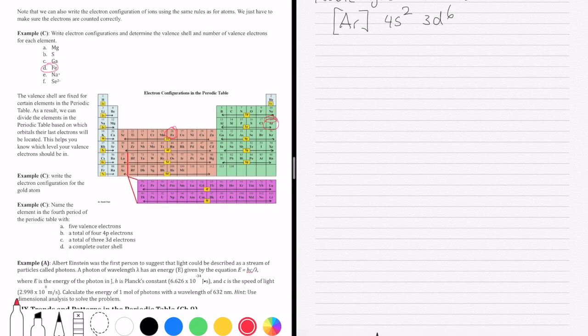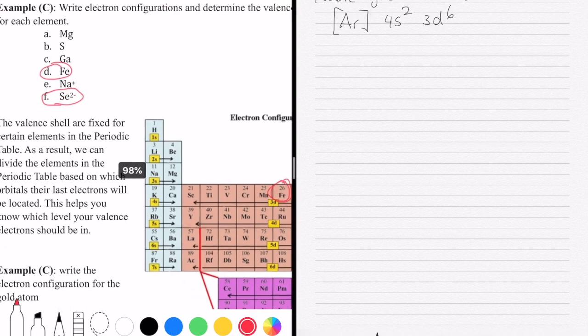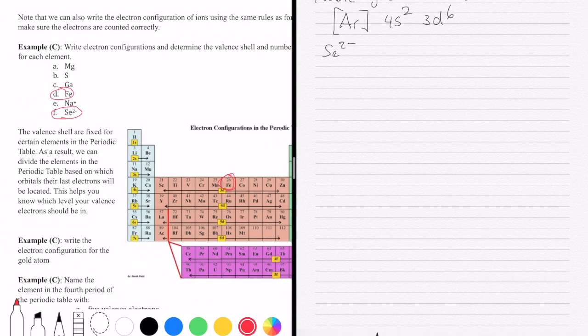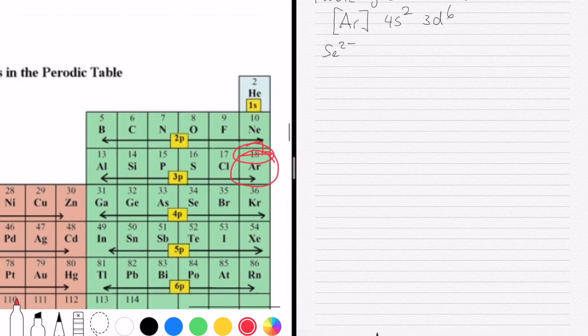Let me do another example now with an ion. So let's say we have the selenite ion, Se2- in this case. So the same thing as before, we would go to the periodic table to figure out how many electrons selenium has. And selenium has 34 electrons. But we have the selenite ion, which is two more electrons than the atom. So the ion will then have 36 electrons.